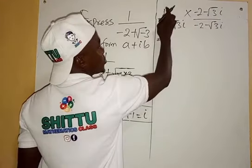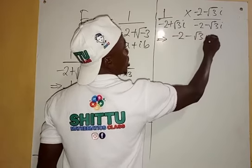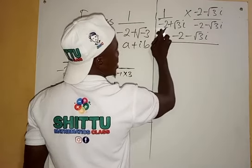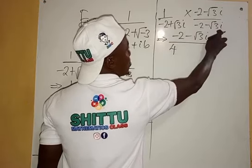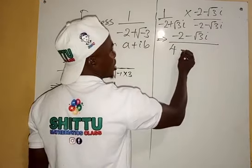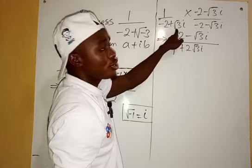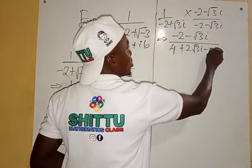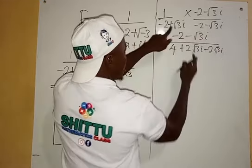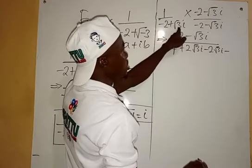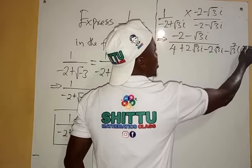Multiplying out the numerator: 1 times minus 2 gives minus 2, and 1 times minus root 3 i gives minus root 3 i. For the denominator: minus 2 times minus 2 gives 4; minus 2 times minus root 3 i gives plus 2 root 3 i; plus root 3 i times minus 2 gives minus 2 root 3 i; and root 3 i times root 3 i gives root 3 squared times i squared.